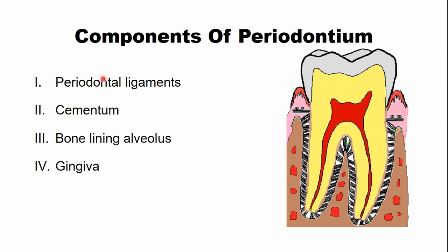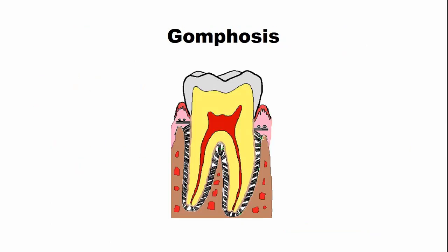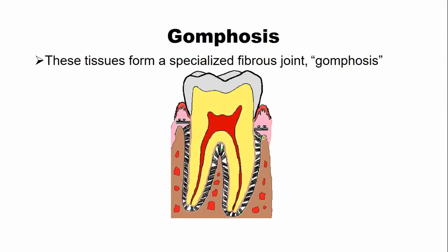These components of the periodontium provide support to the tooth and are necessary to maintain the teeth in function. This is a term known as gomphosis, which is used for the tissues of the periodontium as they form a specialized fibrous joint. This specialized fibrous joint between the tooth and the alveolar bone is known as gomphosis.